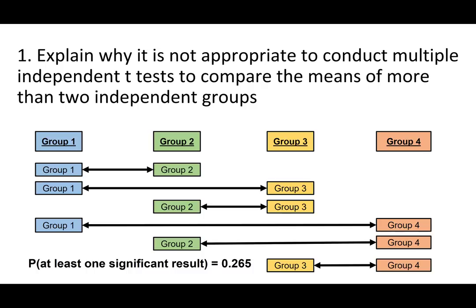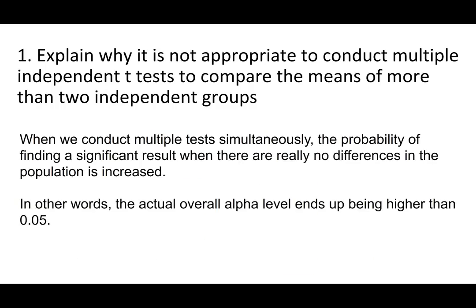If the overall ANOVA is statistically significant, then we can make all of the pairwise comparisons to see which groups are different from one another. To summarize, when we conduct multiple tests simultaneously, the probability of finding a significant result when there are really no differences in the population is increased. In other words, the actual overall alpha level ends up being higher than 0.05.